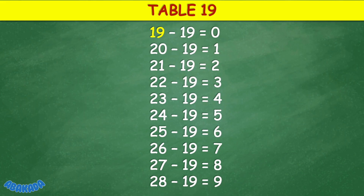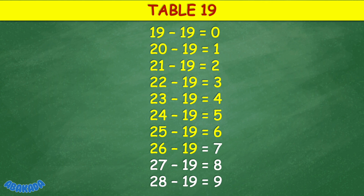Table 19: 19 minus 19 equals 0, 20 minus 19 equals 1, 21 minus 19 equals 2, 22 minus 19 equals 2, 21 minus 19 equals 4, 24 minus 19 equals 5, 25 minus 19 equals 6, 26 minus 19 equals 7, 27 minus 19 equals 8, 28 minus 19 equals 9.